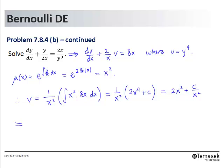Thus, the general solution for the original differential equation will be y to the power 4 equals 2x squared plus c over x squared.